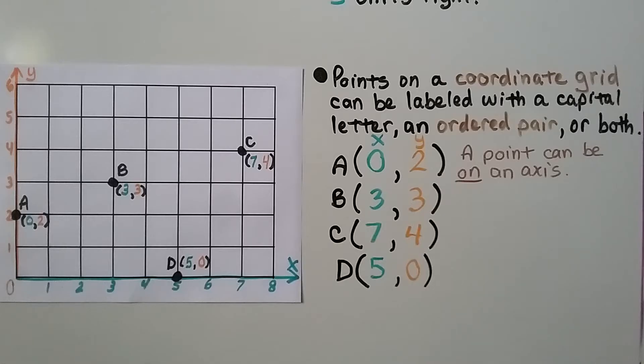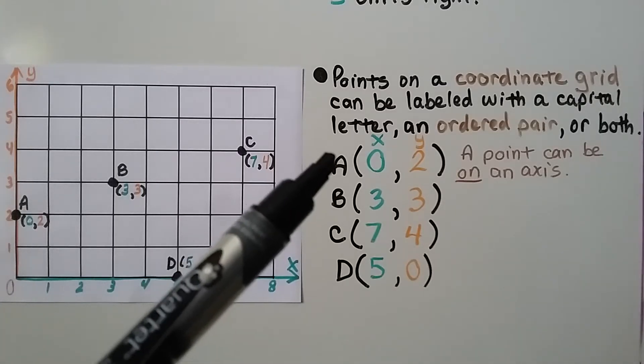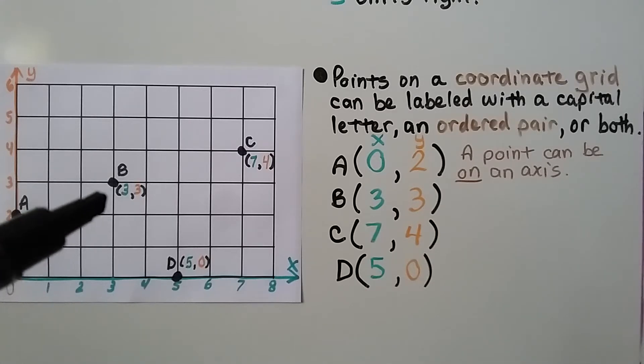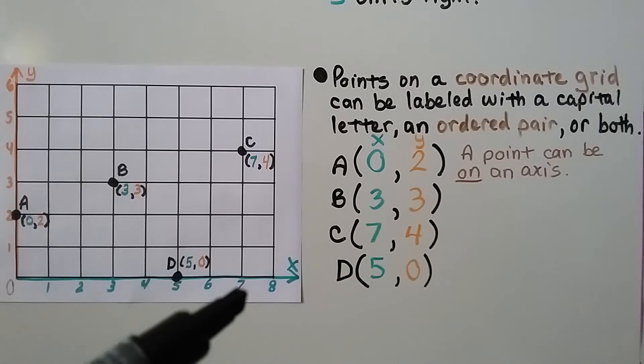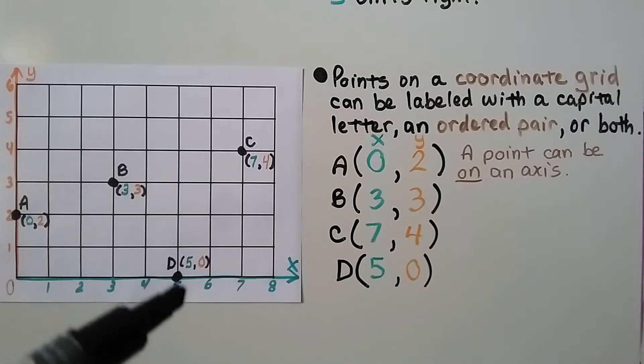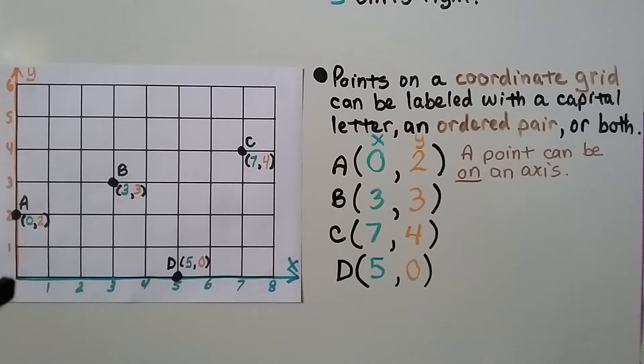Points on a coordinate grid can be labeled with a capital letter, an ordered pair, or both. For point A, it's at 0, 2. It's at 2 for y, so it's actually on the y-axis. A point can be on an axis. Point B is at 3, 3. Point C is at 7, 4. And point D is at 5 for x and 0 for y.